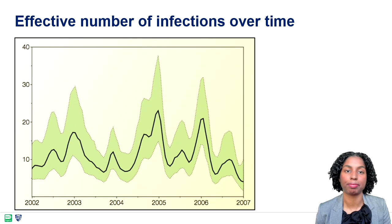In this example, using genetic data of seasonal influenza H3N2 globally, we were able to recover changes in the viral population, that is, the number of infections over time. Black represents the mean and green the confidence intervals. We can see peaks in the northern hemisphere winter and small peaks in the southern hemisphere winter, which accurately represents the seasonality of human flu epidemics.